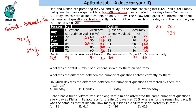First question: what was the total number of questions solved by them on Saturday? Pay attention — it says 'solved', not 'correctly solved.' If it asked for correctly solved, you'd add the correct values. Since it asks questions solved, the answer is 60 plus 66, which is 126 questions.